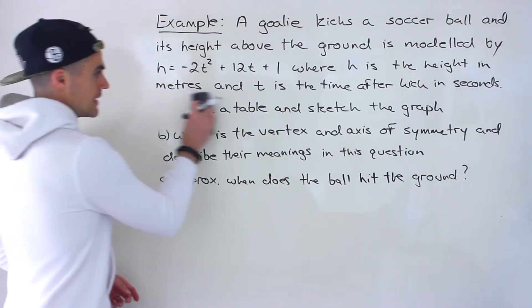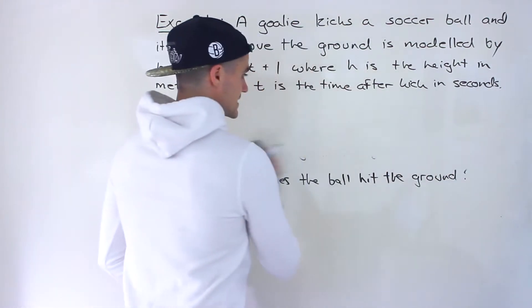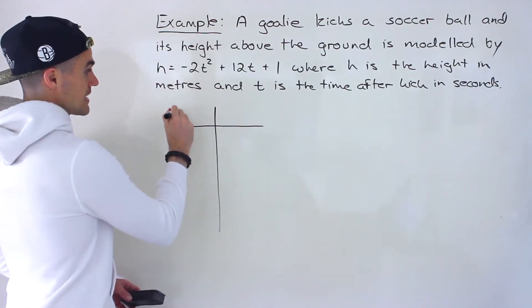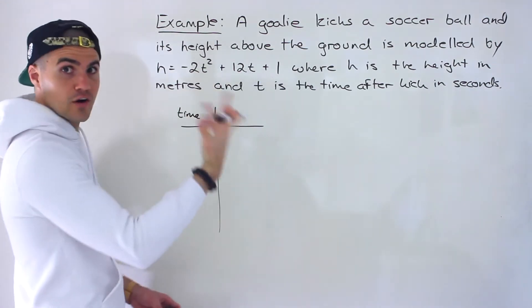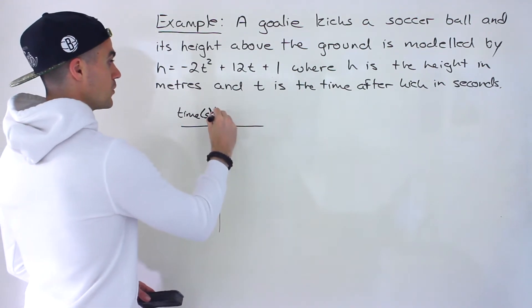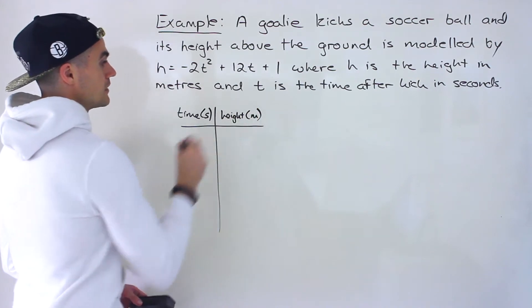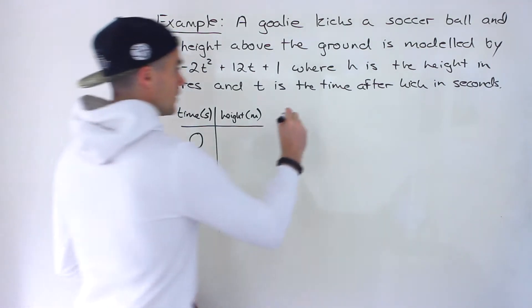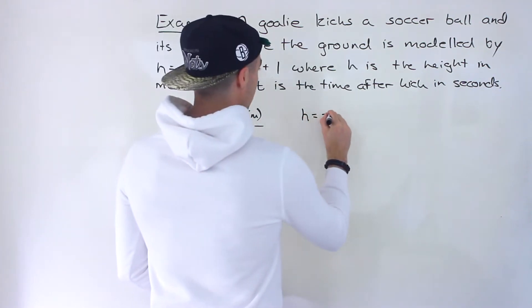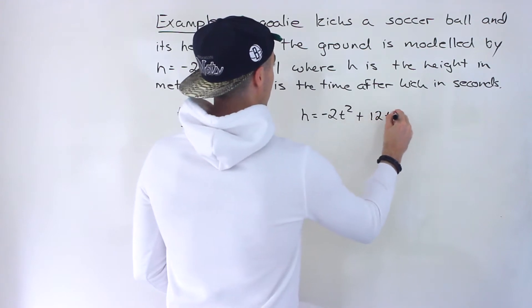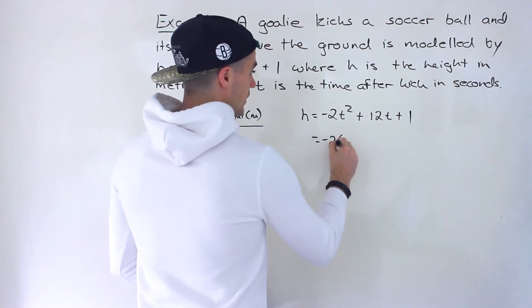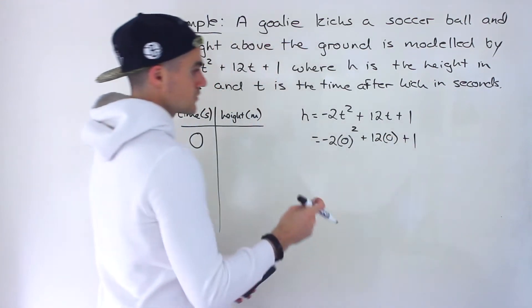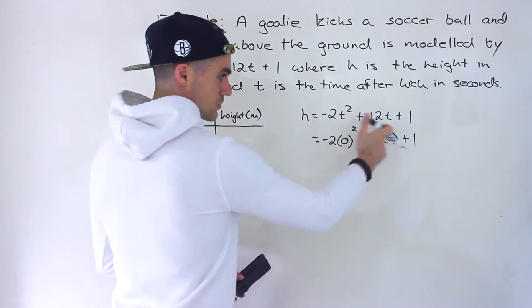Let's start with part A — create a table then sketch the graph. The independent variable is time, represented by T in seconds, and the dependent variable is the height of the soccer ball in meters. Starting with the initial height at 0 seconds, we plug in 0 for T. Zero squared times negative 2 is 0, plus 12 times 0 is 0, and we're left with plus 1.